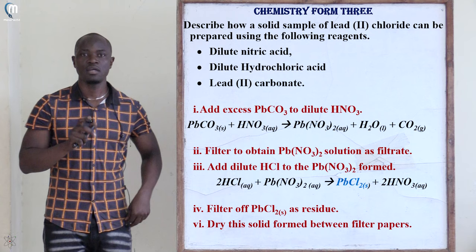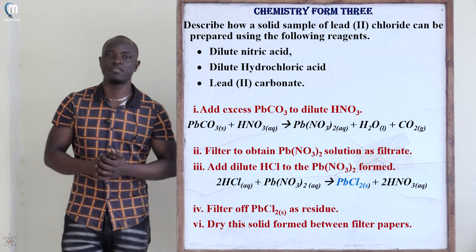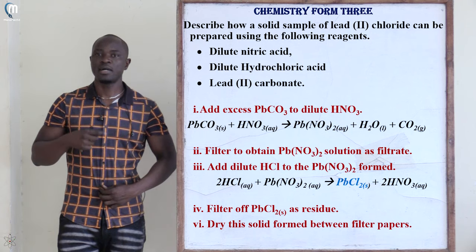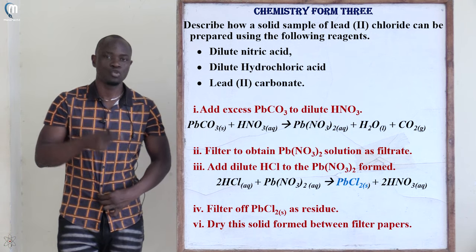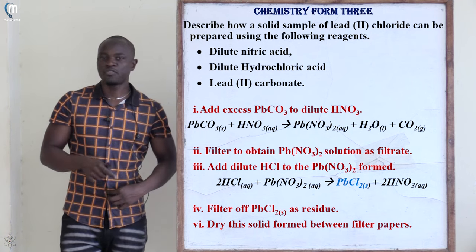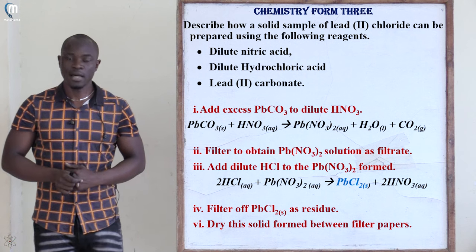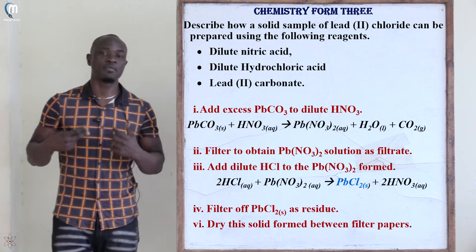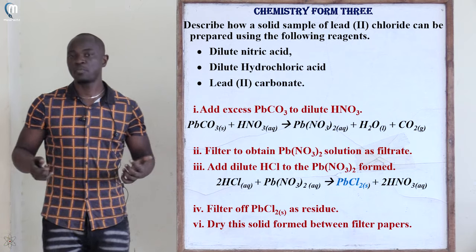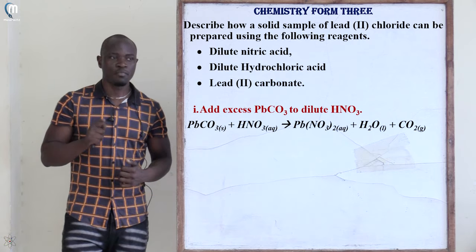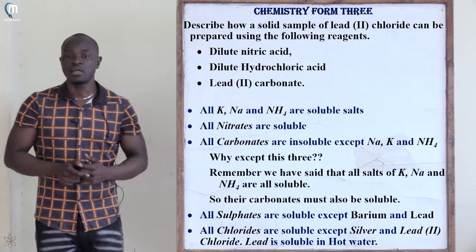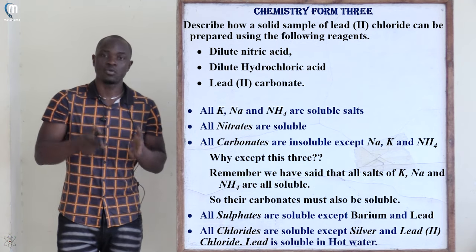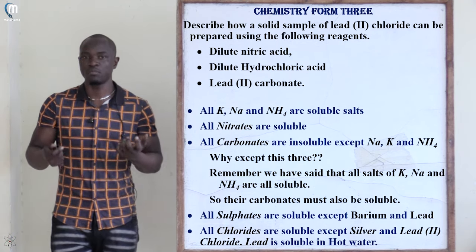So we have dilute nitric acid, dilute hydrochloric acid, and lead(II) carbonate to prepare lead(II) chloride. This question is testing on a Form 2 topic: salts — specifically the preparation of salts. The most important thing we should know is which salts are soluble and which salts are not soluble.